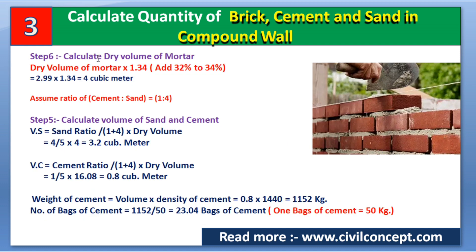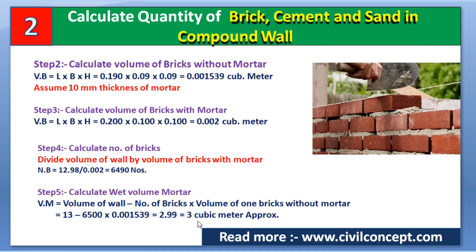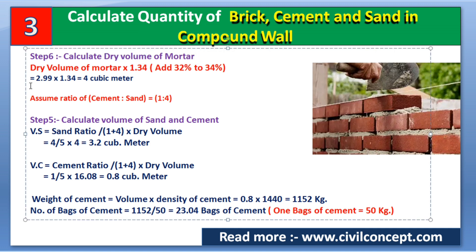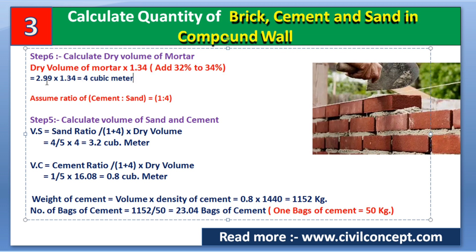In Step 6, we convert the wet volume of mortar to dry volume. Remember that to convert to dry volume, we add 32 to 34 percent of the wet volume. Wet volume = 2.99 cubic meters. I am adding 34%, so multiplying by 1.34: 2.99 × 1.34 ≈ 4 cubic meters. This is the dry volume of mortar.